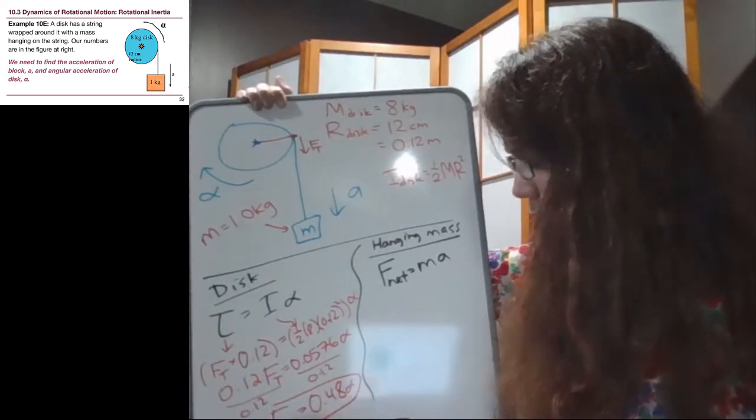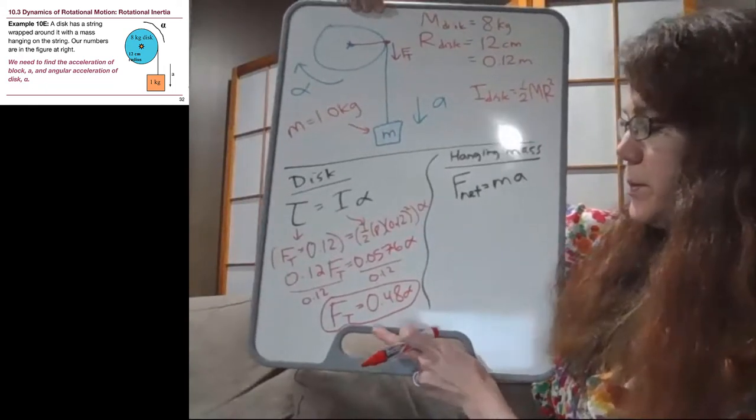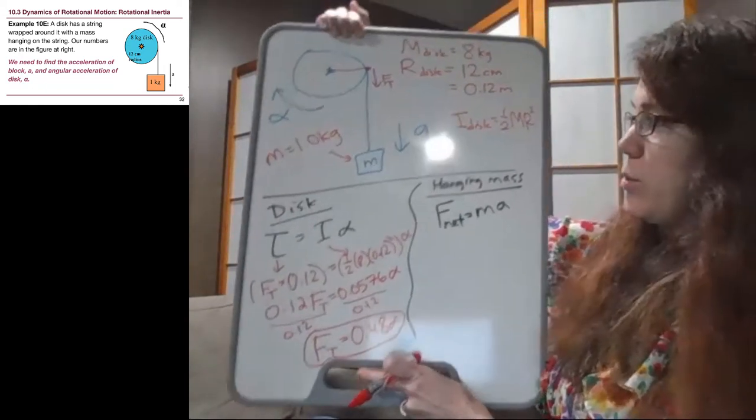Okay, in this boxed equation that I've got here at the bottom of the board, we have two unknowns, which means it's not yet solvable.